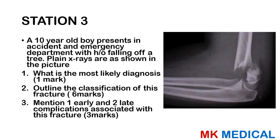Station 3: A 10-year-old boy presents to accident and emergency with a history of falling off a tree. Plain x-rays are shown in the picture. What is the most likely diagnosis? Outline the classification of this fracture. Mention one early and two late complications. I always stress that you may not get the same pictures in your exam, but the principle always remains the same.